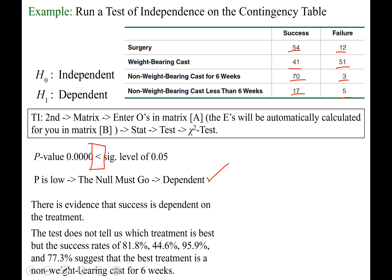For example, the success rate for surgery is 81.8%. And you can calculate that by doing 54 divided by the total number of surgeries. Let's see, 54 plus 12 is 66. So if you do 54 divided by 66, you get 81.8.